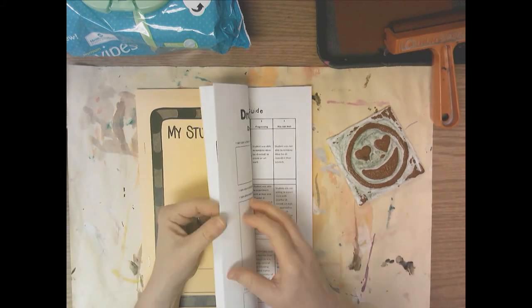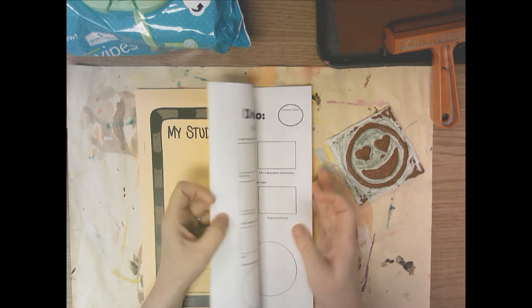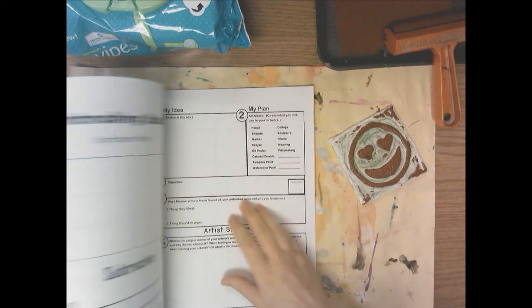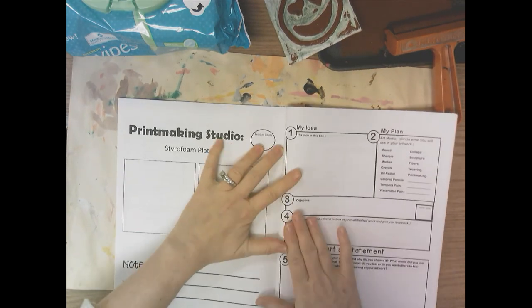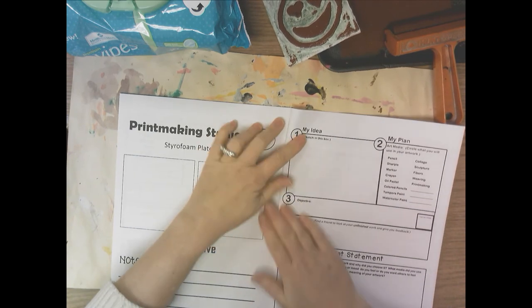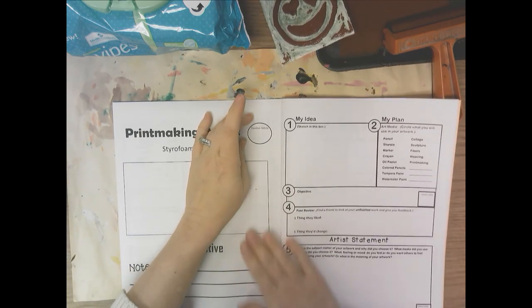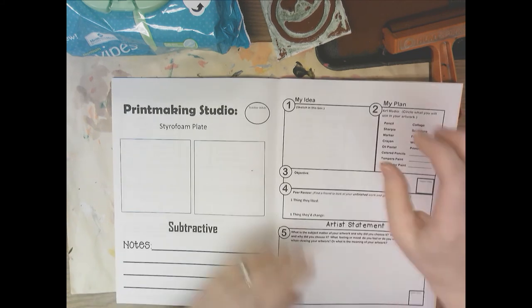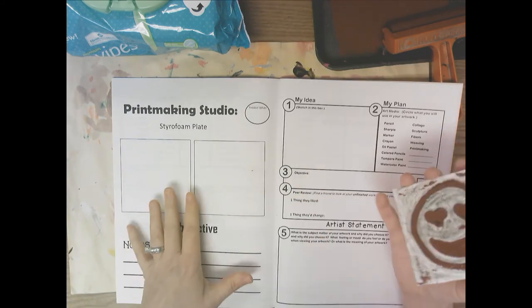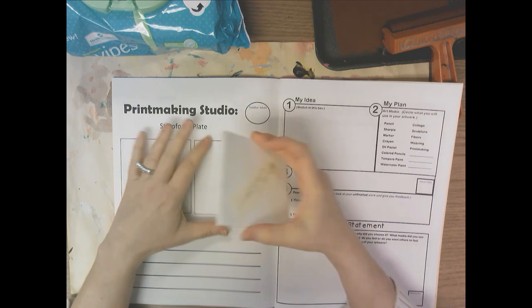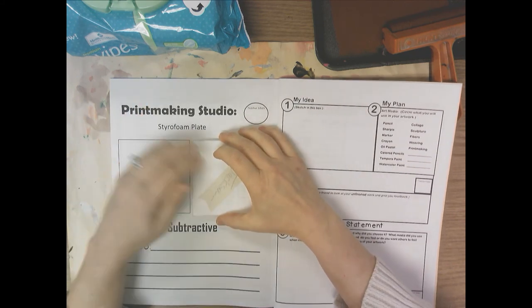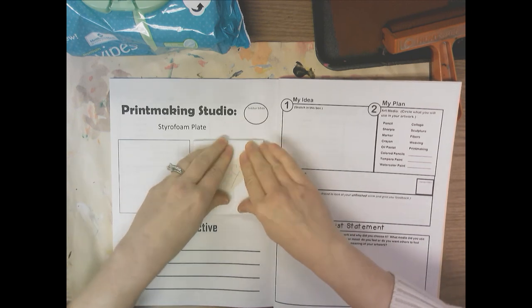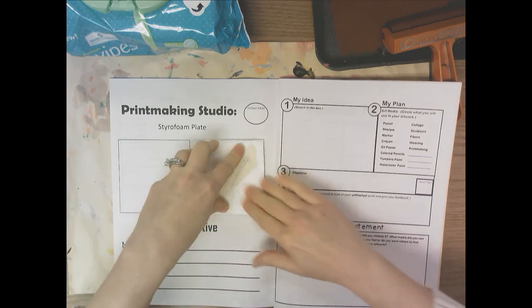So then you're going to print directly into your sketchbook. So you're going to open up your sketchbook to the printmaking page, Printmaking Studio. You're going to fold this so it stays open. And you have two squares to print in. If you get a nice print off the first one, you don't have to do the second square. If you don't get a very good print the first time, I want you to roll ink again and try a second time. Sometimes it takes more than one time to get it printed correctly or neatly.